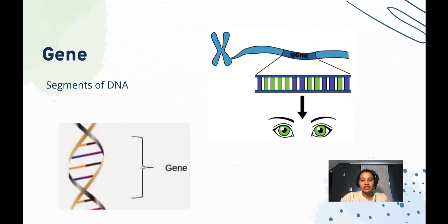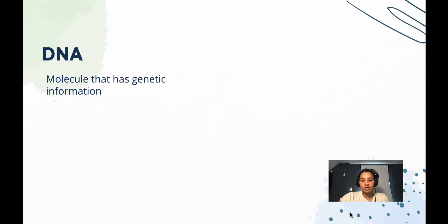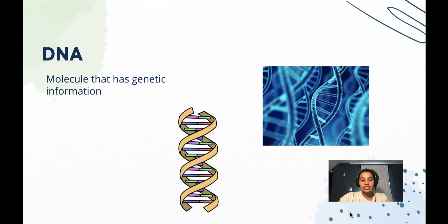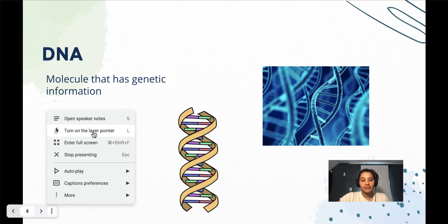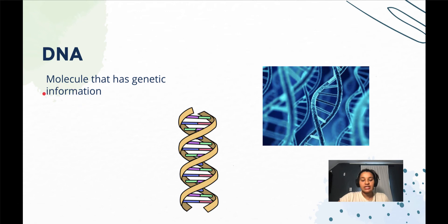Before we get started, let's review some vocabulary. The first word that we need to know for this lesson is gene. A gene is a segment of DNA that codes for traits. The second vocabulary word is DNA. DNA is a molecule that has genetic information. It's found in the nucleus of most body cells.